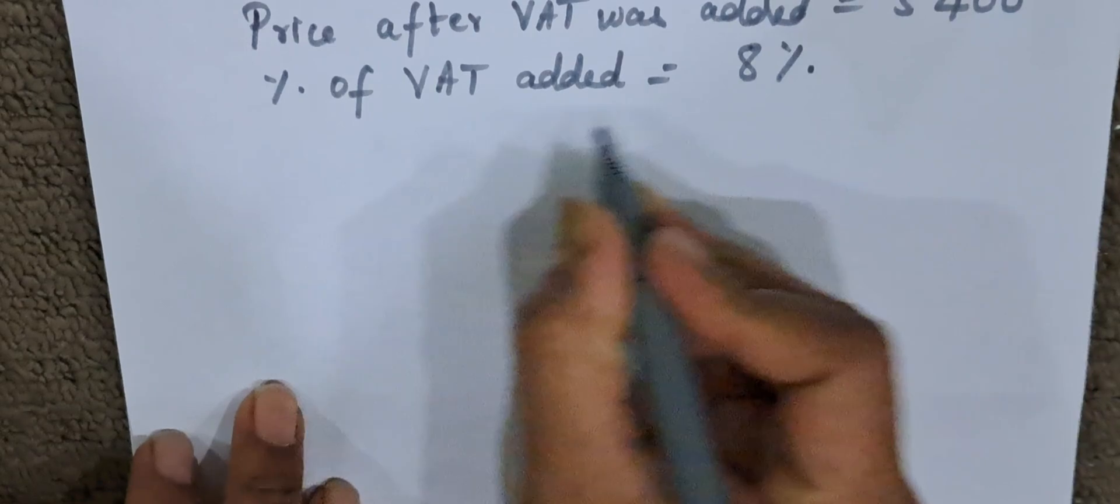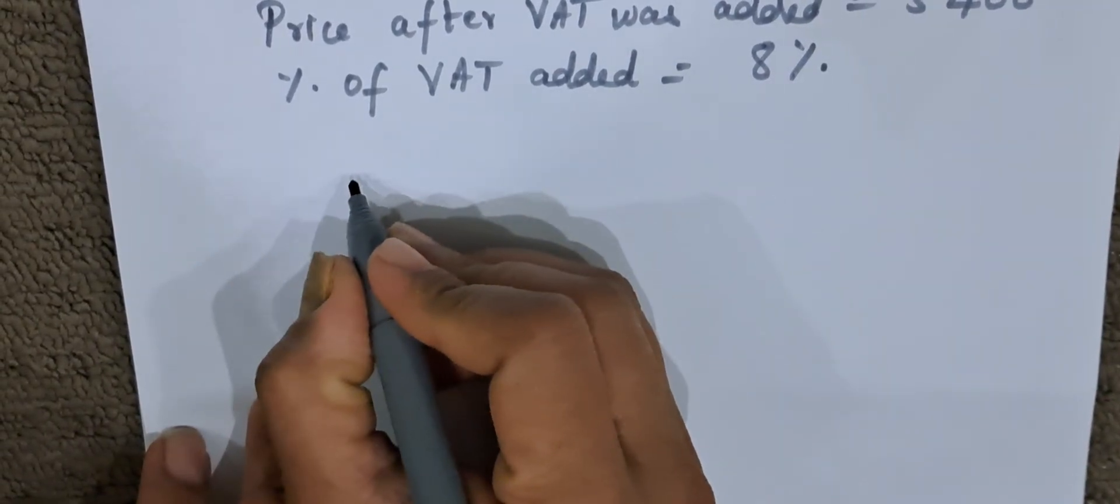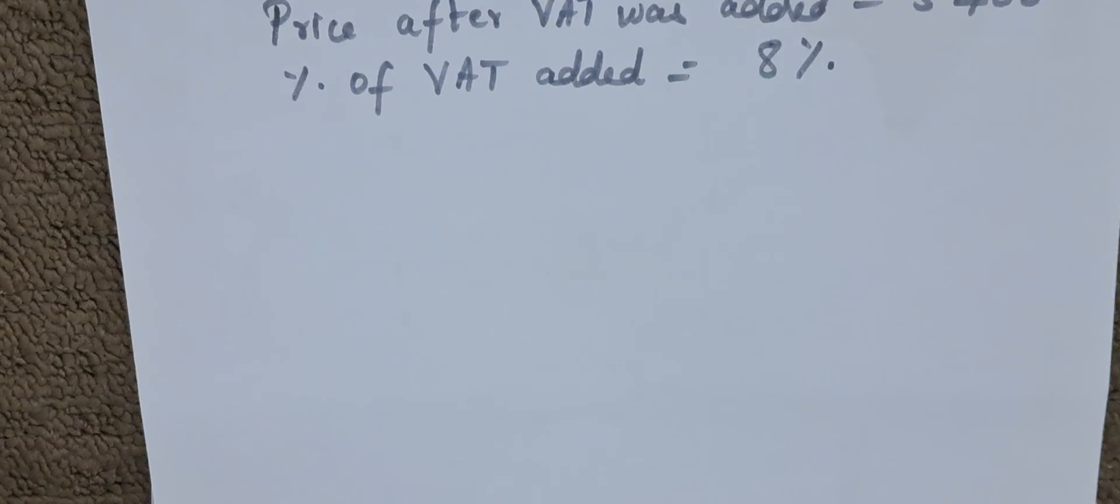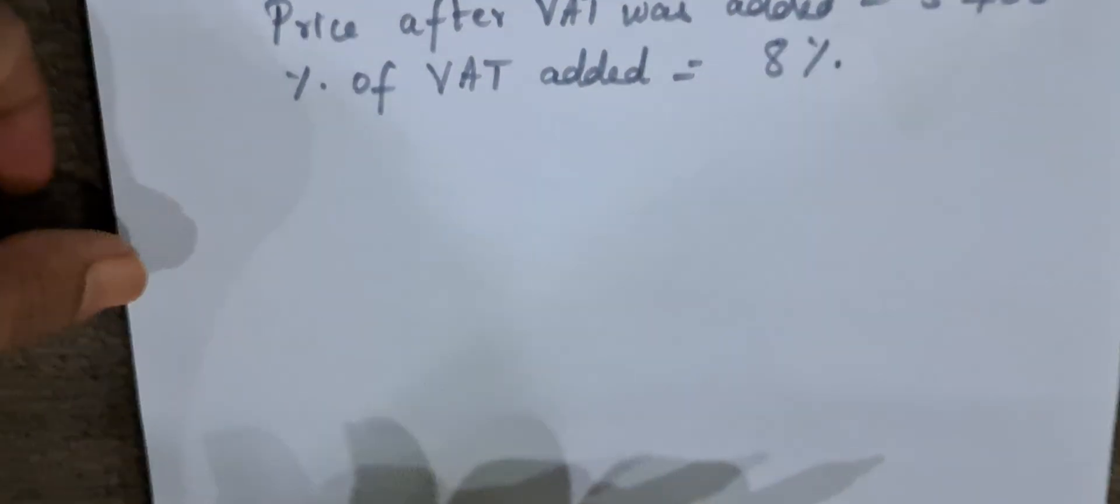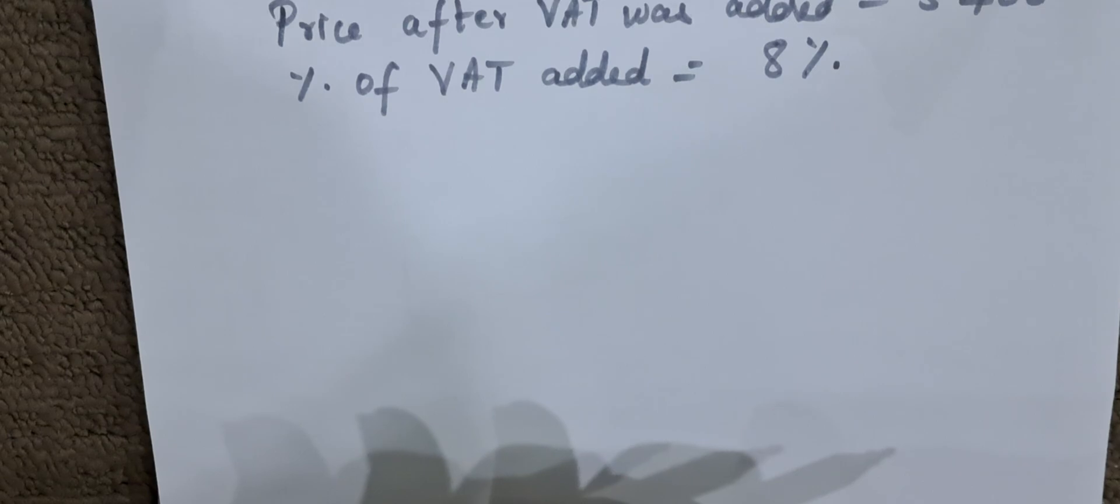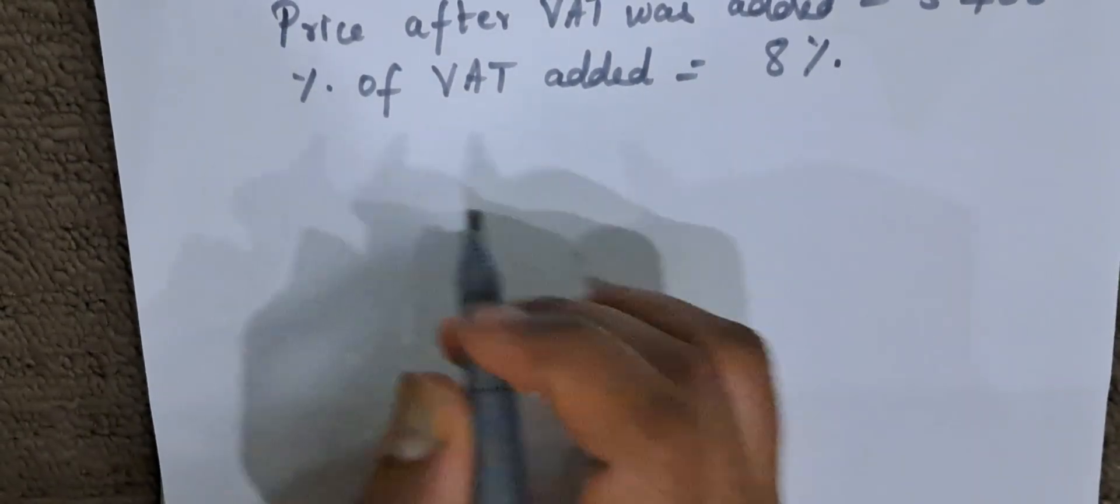See, when 8% tax is added it is 5,400. So let us consider the whole price. Let us consider the amount to be 100% before tax. 100% is before tax and 8% tax is added. So what happens? 108%.